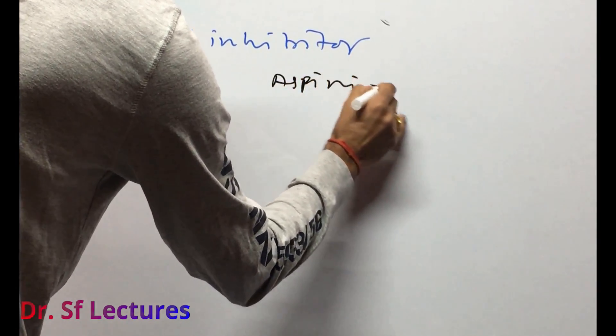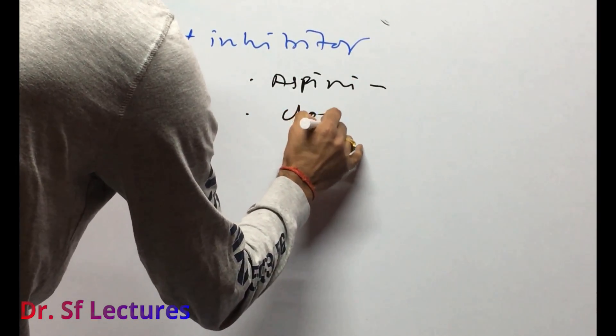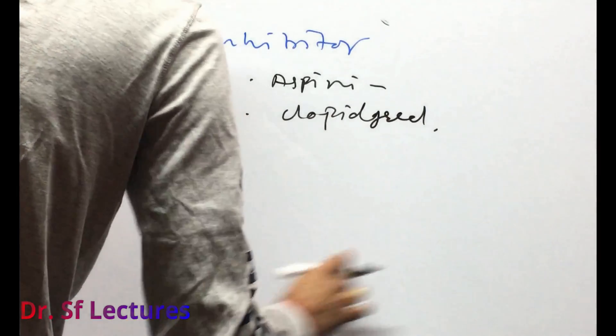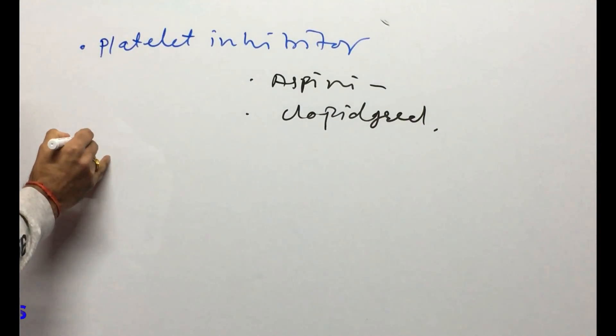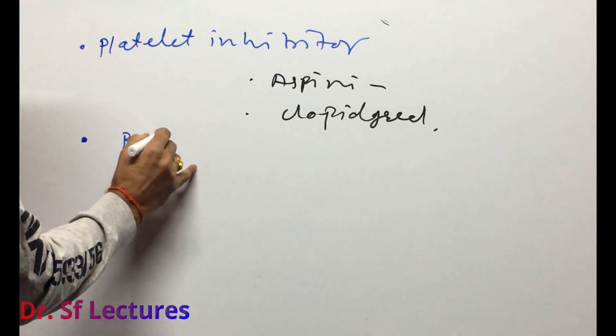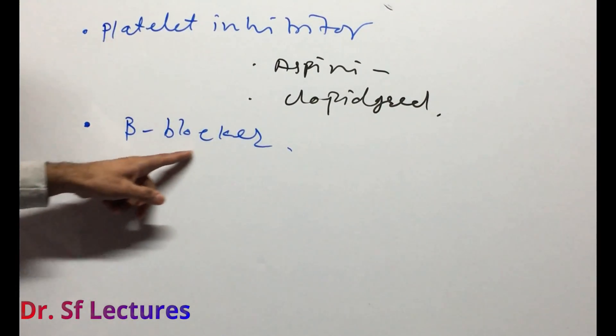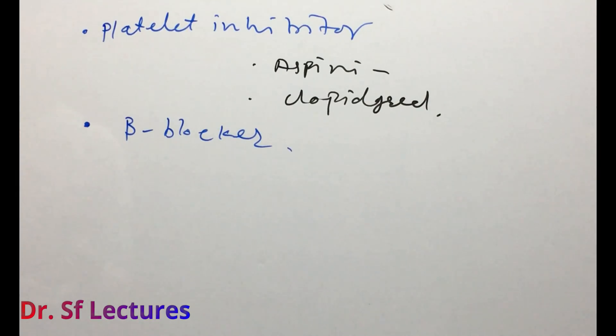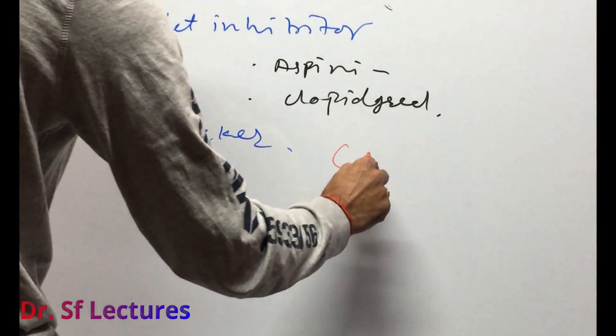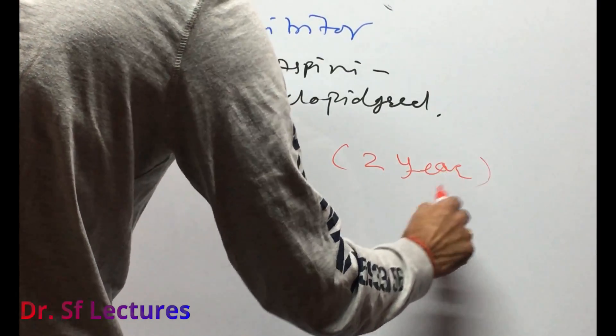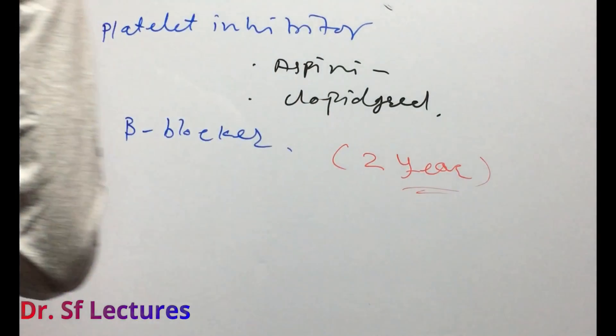Like aspirin and clopidogrel. We can use beta blocker for a long time. Beta blocker will reduce the area of infarction, so we will choose beta blocker for at least two years continuing.